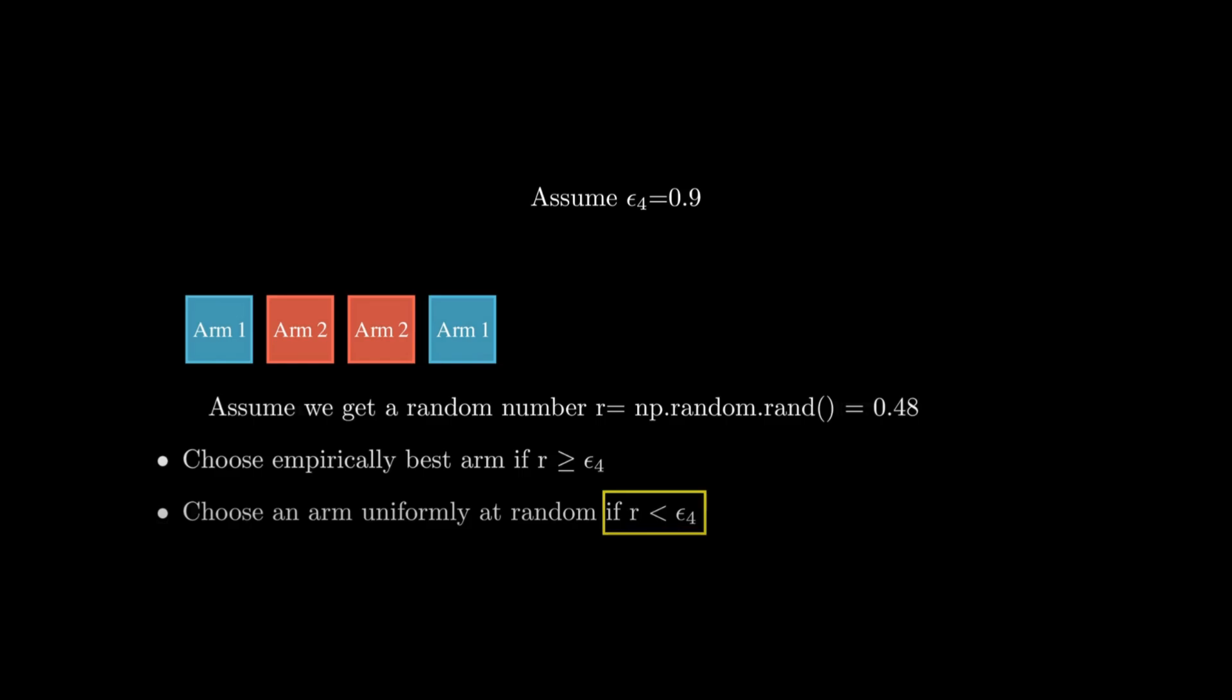Let's say that we are running an experiment with two arms, arm 1 and arm 2. In the first experiment, let's say we ran with epsilon 0.48. Since the random number is less than the epsilon, we will select an arm uniformly at random. So in this case, let's say we selected arm 1.